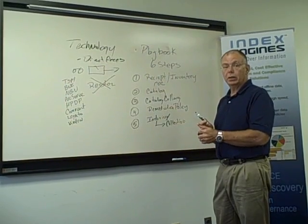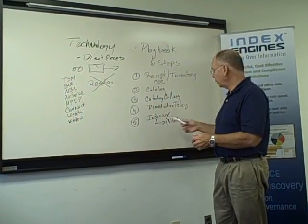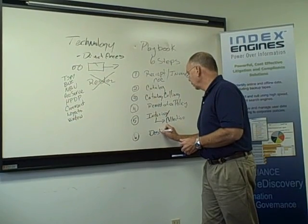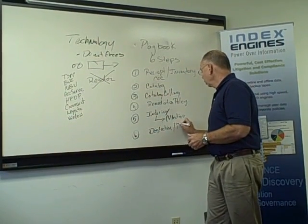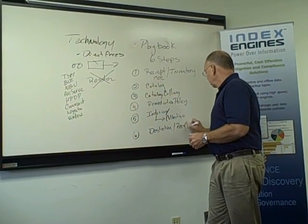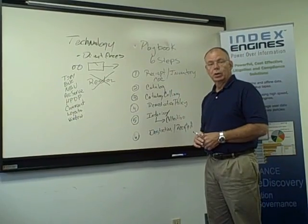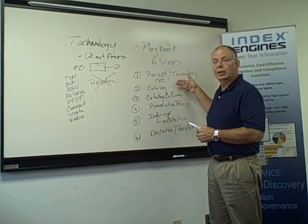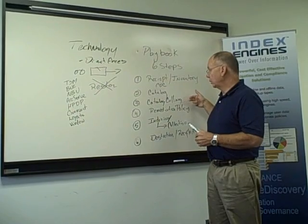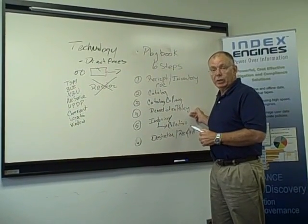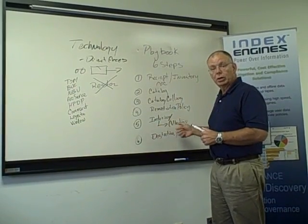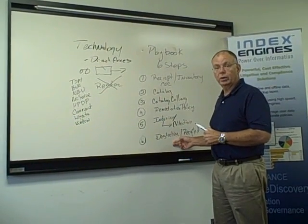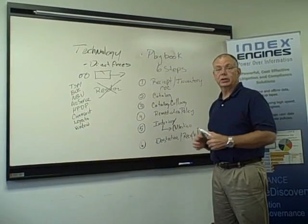Once the data that's responsive is remediated off tape into the collection, there comes the last step — the destruction phase — where the tapes can either be destroyed or recycled for prior use. So as you can see, it's a very simple six-step operation: get the tapes, start your chain of custody process, catalog the tapes, determine which tapes need to be processed at the culling phase, set up a remediation policy defined by legal, index the tapes, collect the data that's responsive to your collection and archive, and at that point you can destroy the tapes — completing your chain of custody process.